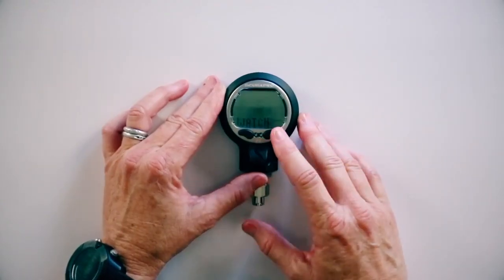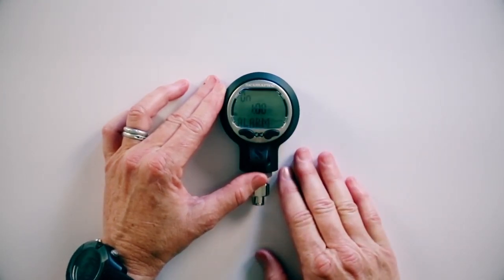Instead of going through all those functions to set up the watch, we're just going to hit the back button from the home screen, and we'll be right there. To get into the watch, we're going to push and hold the right button.